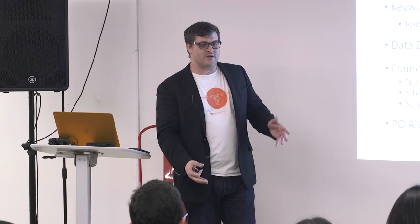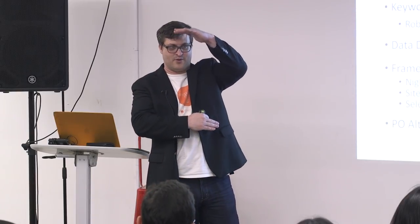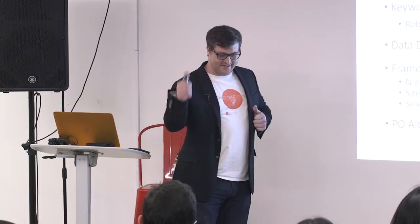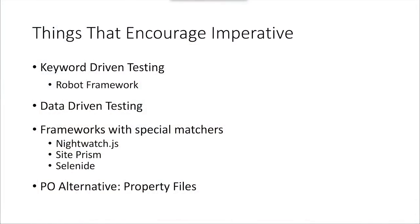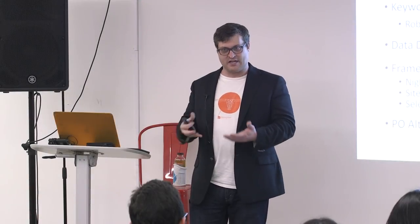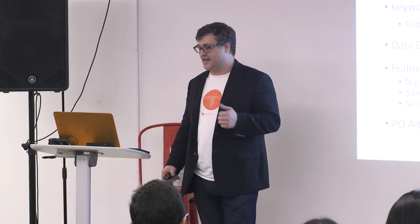There are a number of things in the industry that force us to stay detail-oriented and prevent us from abstracting things. Data-driven testing is another one — something a lot of BDD people will misuse. Have you seen scenario outlines where you've got a huge table of data and you can't parse any of it? Good thing it's in natural language, right? Frameworks like Nightwatch.js, SitePRISM, and Selenide have custom matchers that end up calling specific methods on the driver instead of abstracting that logic away. I've also seen someone make a page object alternative where everything was in property files in Java — but to leverage it, you had to put all that logic in the test itself.